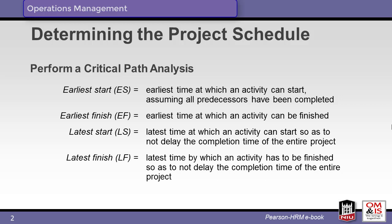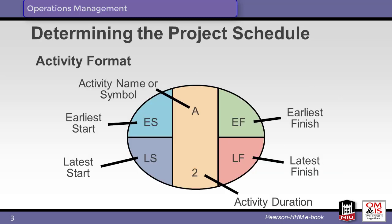To perform a critical path analysis, we need to understand the four times associated with each activity. The earliest start represents the earliest date that an activity can be started, typically driven by the completion of preceding tasks. The earliest finish is simply the earliest start plus the duration of the current activity. The latest start is the latest an activity can start without affecting the overall outcome of the project. The latest finish is the latest start plus the duration. Here's the schematic displaying the structure of the activity format. You should memorize the location of each item: start is on the left, finish is on the right, earliest is on top, latest is on the bottom.